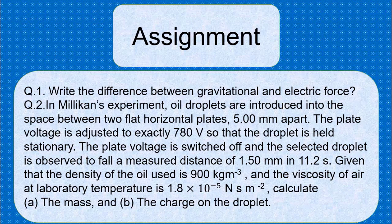Question number two: In Millikan's experiment, oil droplets are introduced into the space between two flat horizontal plates 5 mm apart. The plate voltage is adjusted to exactly 780 volts so that the droplet is held stationary. The plate voltage is then switched off and the selected droplet is observed to fall a measured distance of 1.5 mm in 11.2 seconds. Given that the density of the oil used is 900 kg per cubic meter and the viscosity of air at laboratory temperature is 1.8 into 10 raised to the power minus 5 newton second per square meter, calculate the mass and the charge on the droplet. All the best for your assignment.